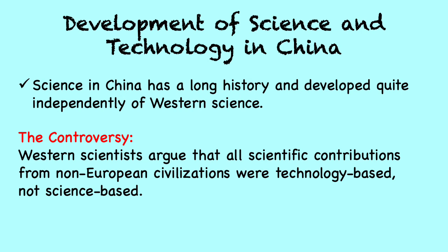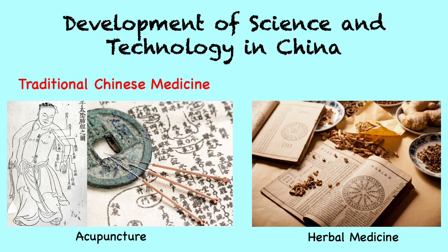The four great inventions of China are the compass, gunpowder, papermaking, and printing. These were among the most important technological advances only known in Europe by the end of the Middle Ages. One of the oldest long-standing contributions of the ancient Chinese is traditional Chinese medicine, including acupuncture and herbal medicine, derived from Taoist philosophy. According to archaeological findings, the first writings on medicine appeared between the 11th and the 3rd centuries BCE. The practice of acupuncture can be traced as far back as the 1st millennium BCE, and some scientists believe there is evidence that practices similar to acupuncture were also used in Eurasia during the early Bronze Age.